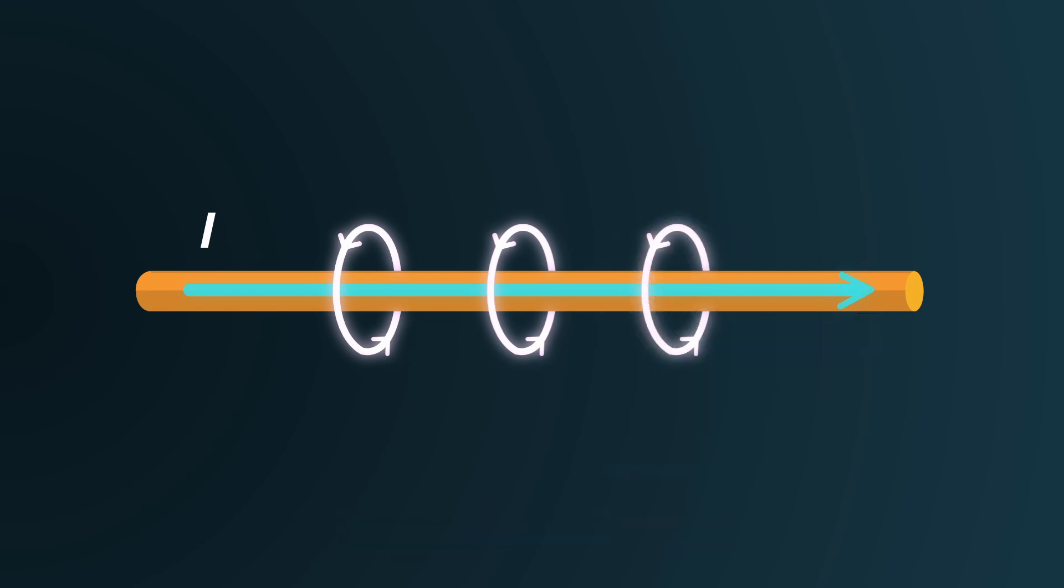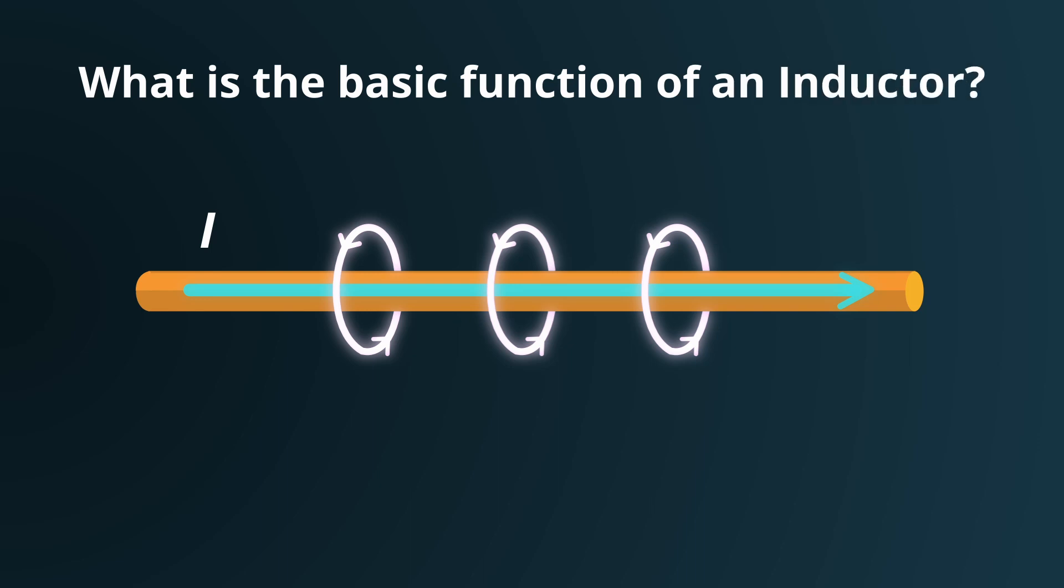Now, the magnetic field generated around the wire isn't just a fancy side effect. It's at the core of how inductors work and find purpose in circuits. So what is this purpose? What is the basic function of an inductor? Well, it is to resist sudden changes in current.